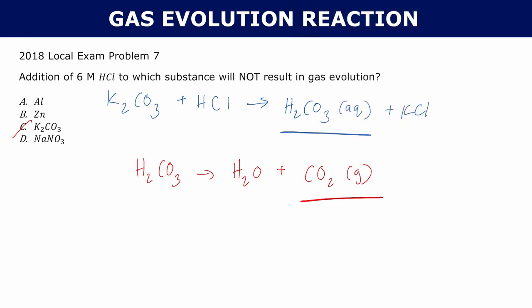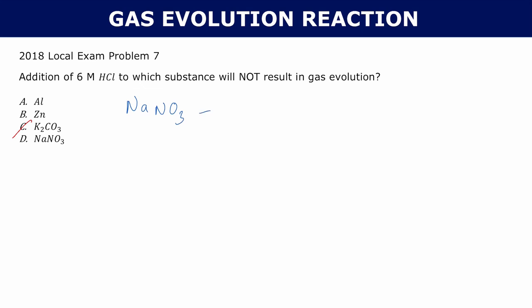Let's look at D: NaNO₃ reacting with hydrochloric acid. The hydrogen pairs up with the nitrate to give HNO₃, and sodium pairs up with chloride to give NaCl. Both of these are aqueous. HNO₃ isn't anything special, and sodium chloride is just a salt — it stays aqueous. So our answer is D. But let's look at A and B to see why they do result in gas evolution.